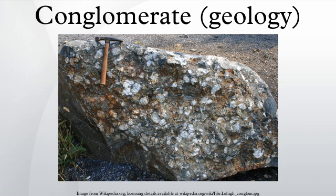Conglomerates are often differentiated and named according to the dominant clast size comprising them. In this classification, a conglomerate composed largely of granule size clasts would be called a granule conglomerate, a conglomerate composed largely of pebble size clasts would be called a pebble conglomerate, and a conglomerate composed largely of cobble size clasts would be called a cobble conglomerate.